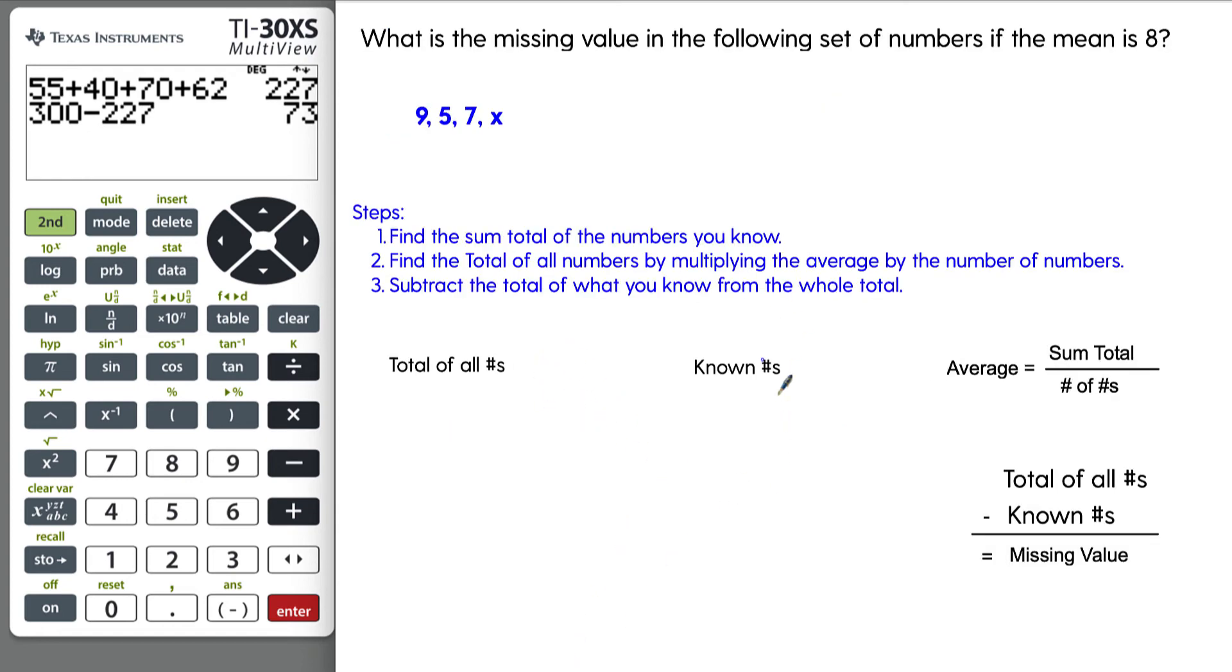Here's a very similar problem, just a little bit easier numbers. What is the missing value of the following set of numbers if the mean is eight? So again, they give us three numbers, but we know that there's a fourth number that is somehow missing. When we add up all these numbers and divide by four, we get eight. So the known numbers are 9 plus 5 plus 7.